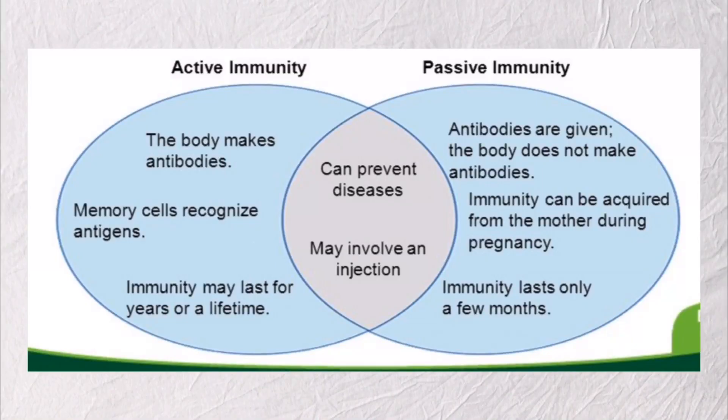Now we are going to compare artificial active immunity and artificial passive immunity. Looking at the table of similarities and differences, they share two similarities: both boost immunity to protect the body from infectious disease, and both involve interaction between antibodies and antigens.